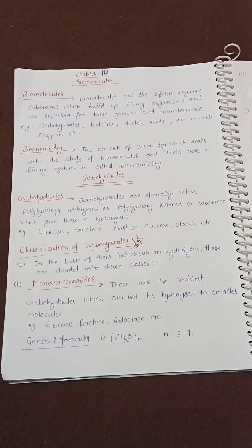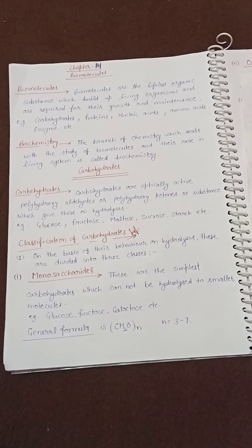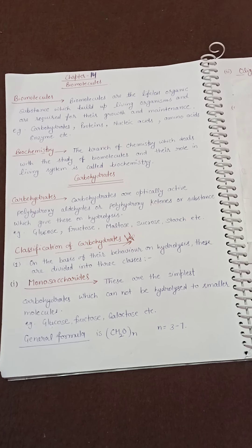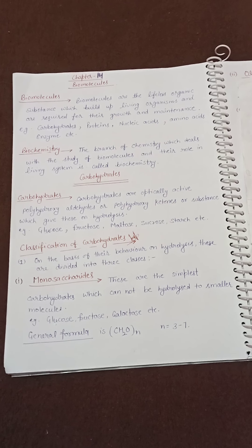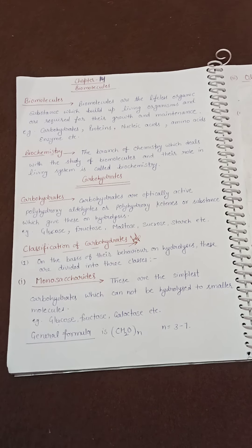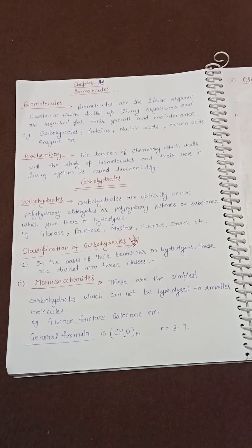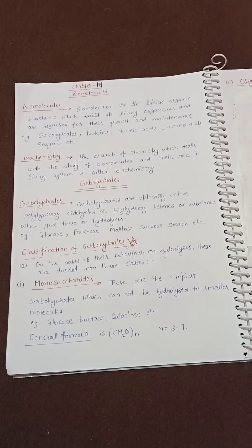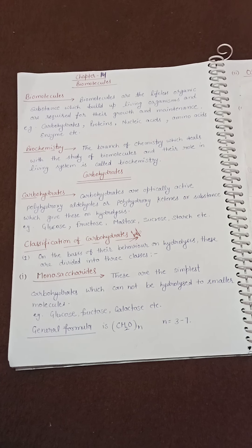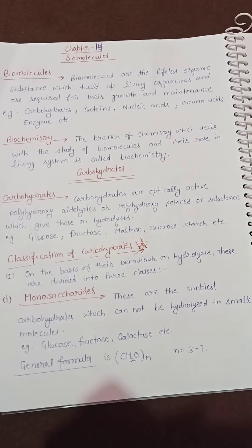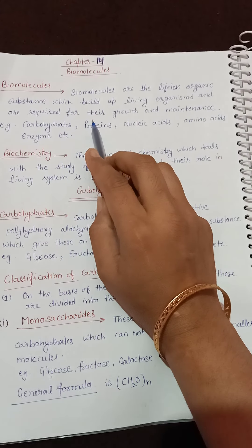The most remarkable characteristic of a living system is that it grows, sustains, and reproduces itself. Another amazing thing is that the living system is made up of non-living atoms and molecules. Various changes take place in living systems. Living systems are made up of a number of complex organic compounds called biomolecules — like carbohydrates, proteins, enzymes, vitamins, hormones, nucleic acids, etc.